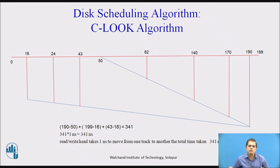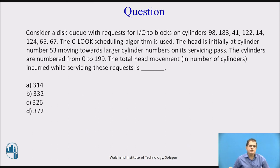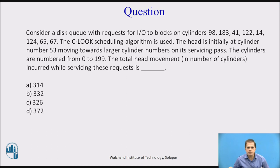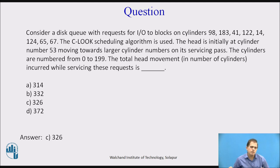The LOOK and CLOOK algorithms are conceptual disk scheduling algorithms that control how the read/write head moves from one track to another. A final question asks: using the CLOOK scheduling algorithm with a disk queue for cylinders 98, 183, 41, 122, 14, 124, 65, 67, with the head initially at cylinder 53 moving towards larger cylinder numbers and cylinders numbered 0 to 199 — what is the total head movement? The answer is 326 cylinders.